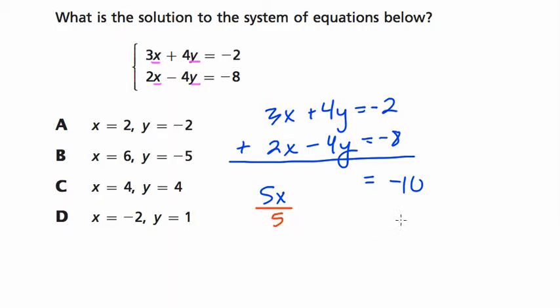5 times something is negative 10. Well, if I want to solve this, I divide both sides by 5. And x is just negative 2. Out of all of our choices, the only one that contains negative 2 is choice D. And that's our answer.